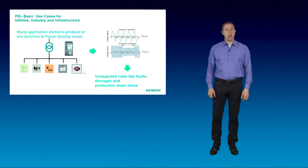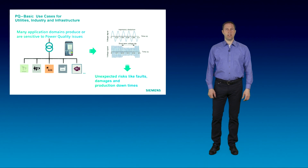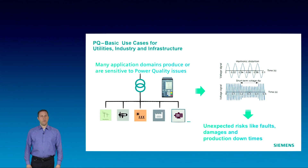Some examples: circuit breaker operations within the grid or start-up behavior of huge motors can lead to voltage dips. Feeding of renewable energies can lead to voltage swells and harmonics. Non-linear loads and variable speed drives in industry could cause harmonic distortions. Unsymmetric loads within the three-phase system leads to voltage unbalances.